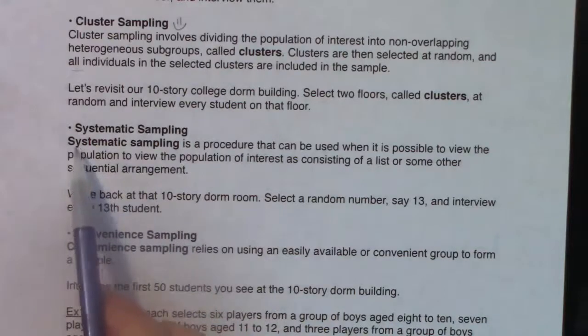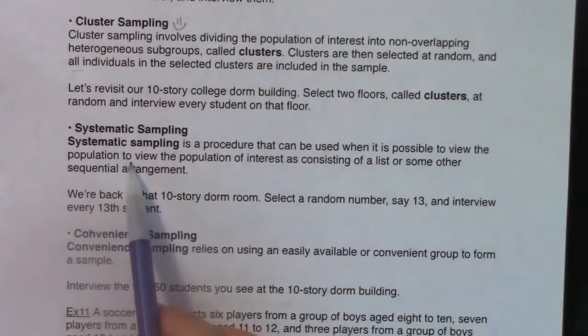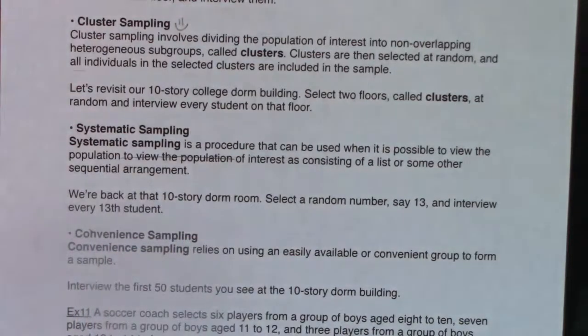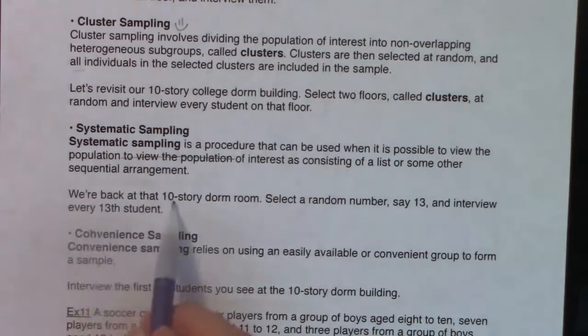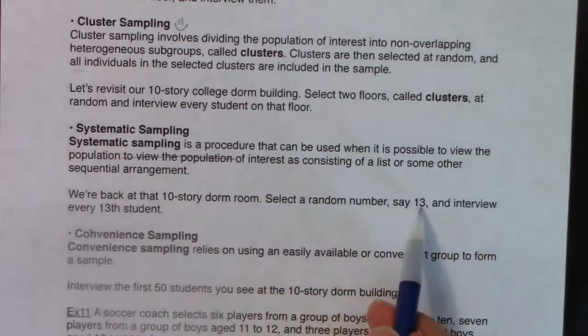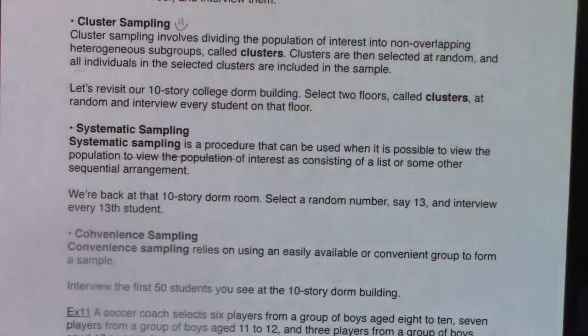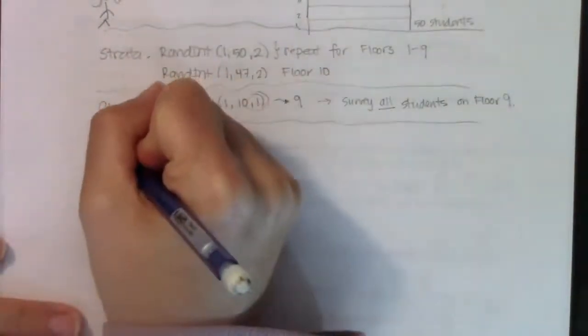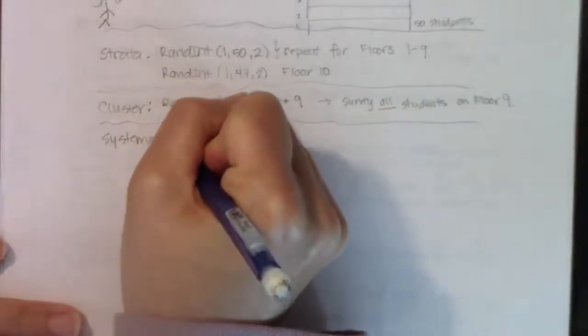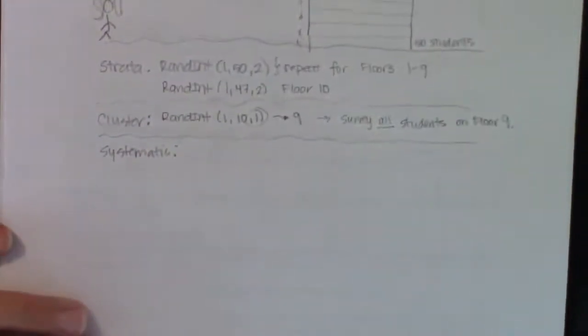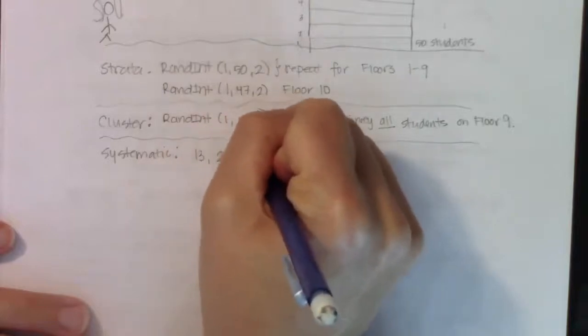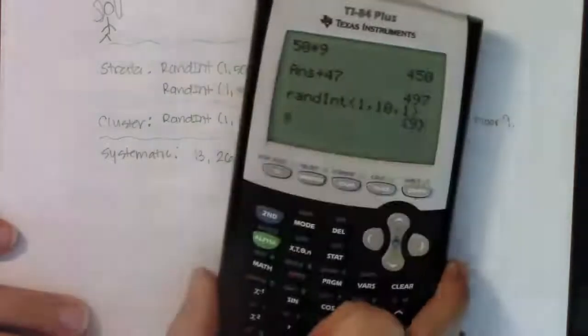Systematic sampling is a procedure that can be used when it's possible to view the population of interest as consisting of a list or some other sequential arrangement. So we're back at that 10-story dorm room, and we're just going to pick a random number, say 13, and interview every 13th student. If I want to go every 13th student, I'd interview the 13th student, the 26th student, the 39th student, and let's keep adding 13 to these numbers.